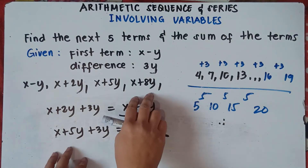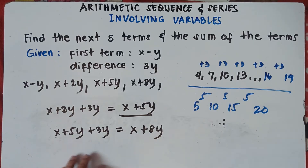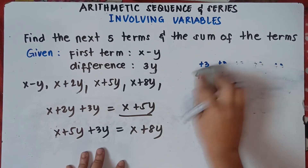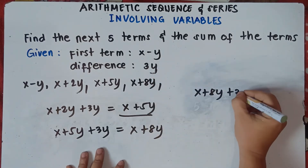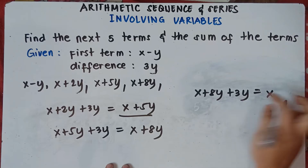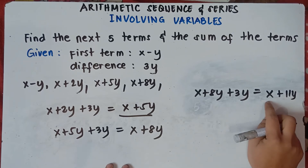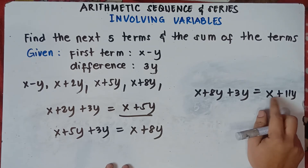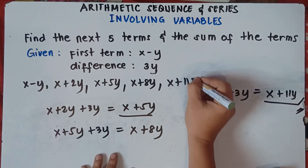To get the fifth term, add x plus 8y by the common difference 3y. So x plus 8y plus 3y: copy x, then 8y plus 3y is 11y. You cannot combine x and y because they don't have the same literal coefficient. So the fifth term is x plus 11y.